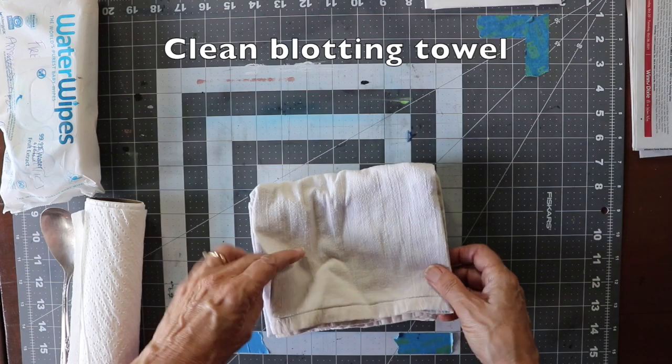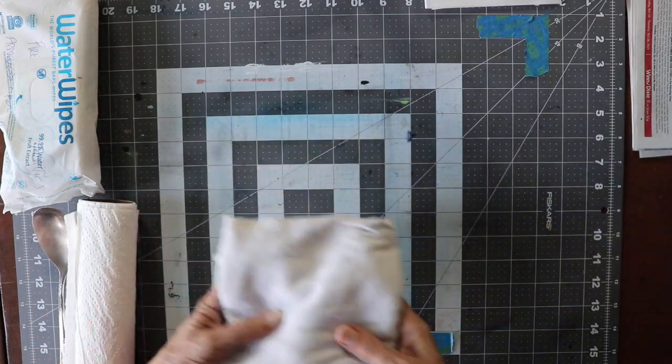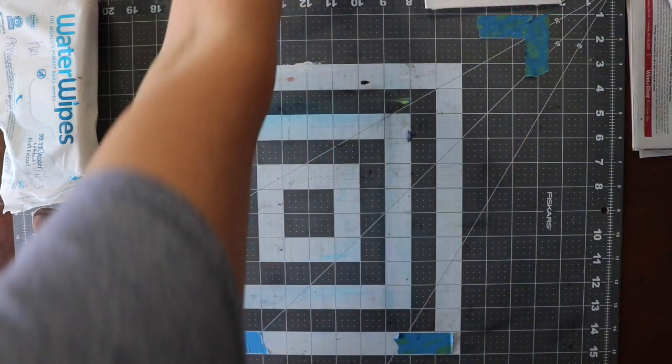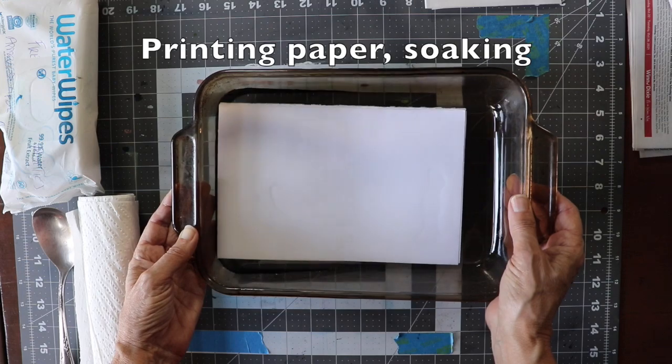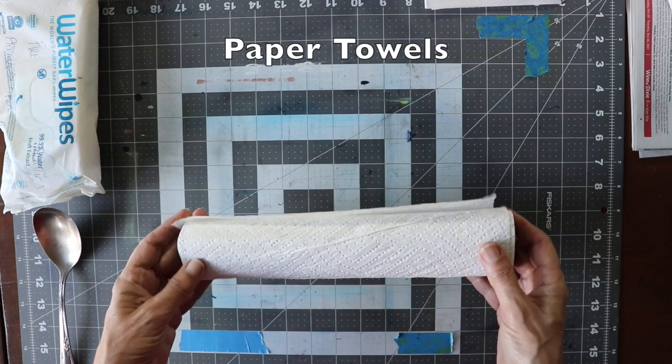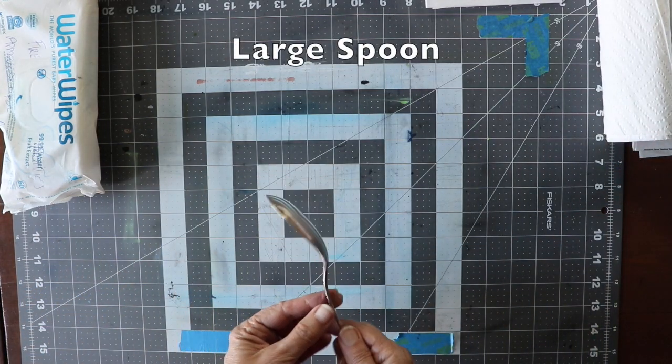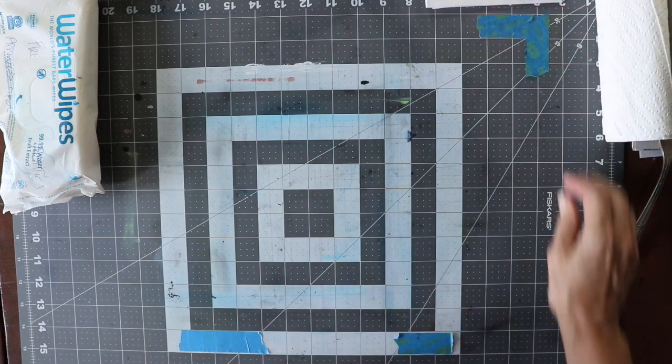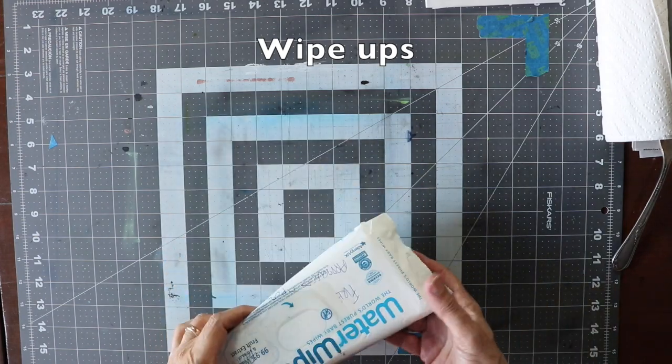A clean towel for blotting your wet paper, my printing paper soaking in water or you can use a sprayer to wet it and blot it before you print, paper towels, I use a large silver spoon to do hand pressing, and wipe ups.